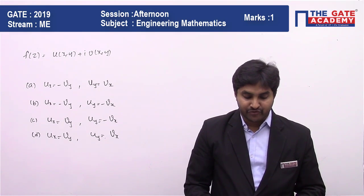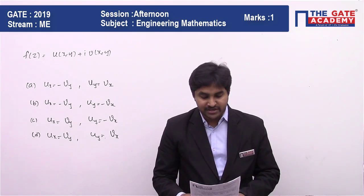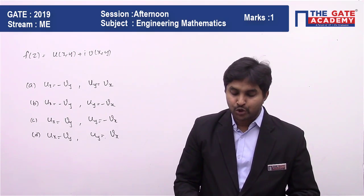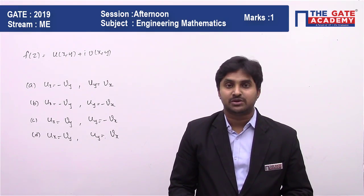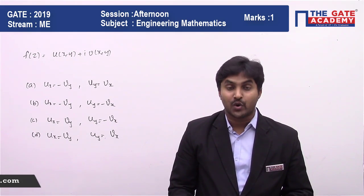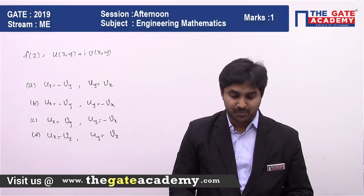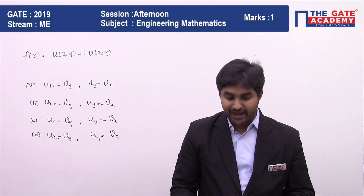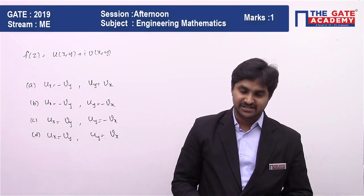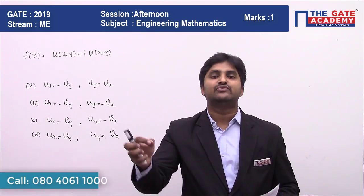Option A: ux = -vy and uy = vx. Option B: ux = -vy and uy = -vx. Option C: ux = vy and uy = -vx. Option D: ux = vy and uy = vx. So it's a very simple question that has been asked on the condition for analytic function, which is the Cauchy-Riemann equation.